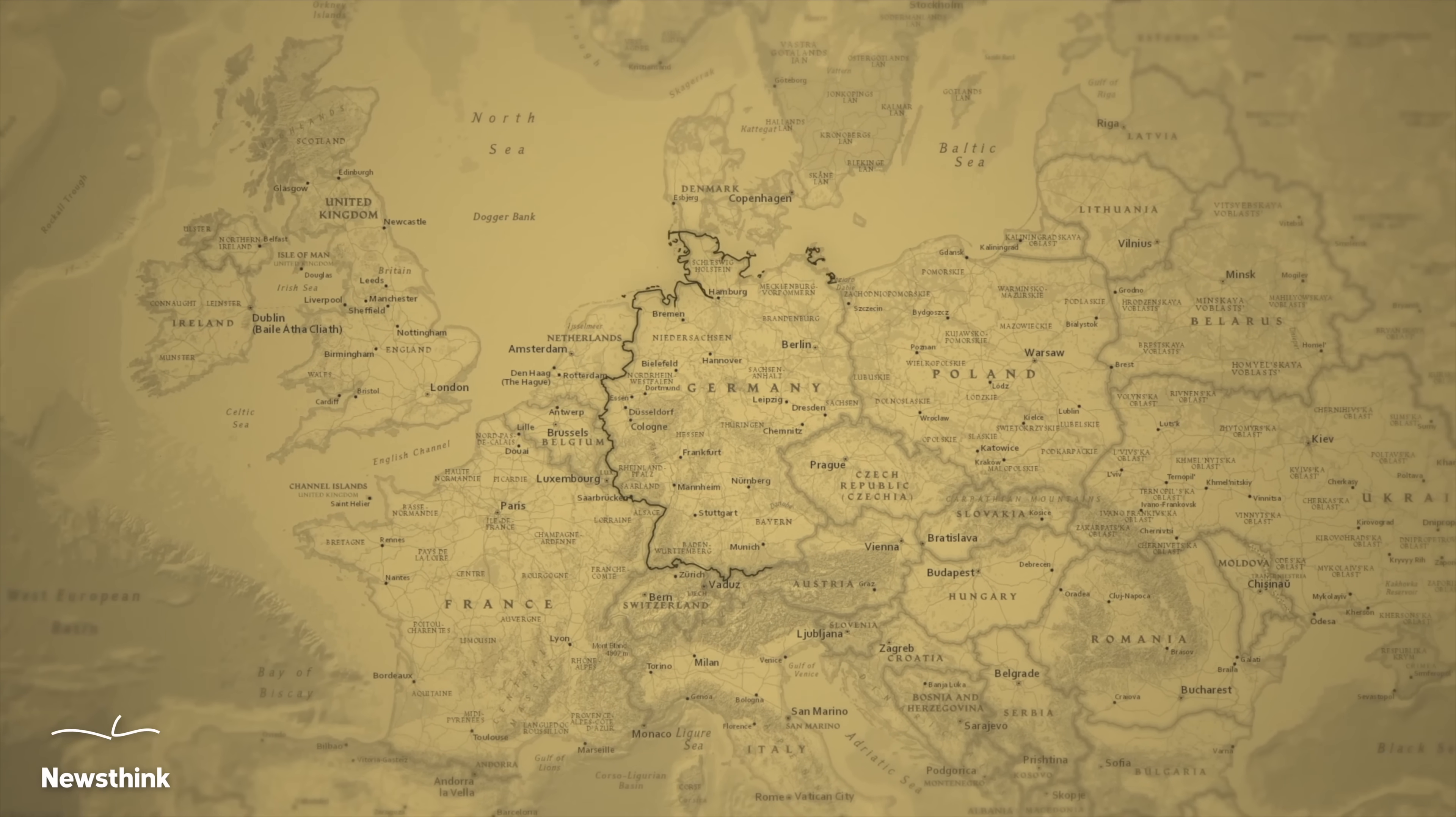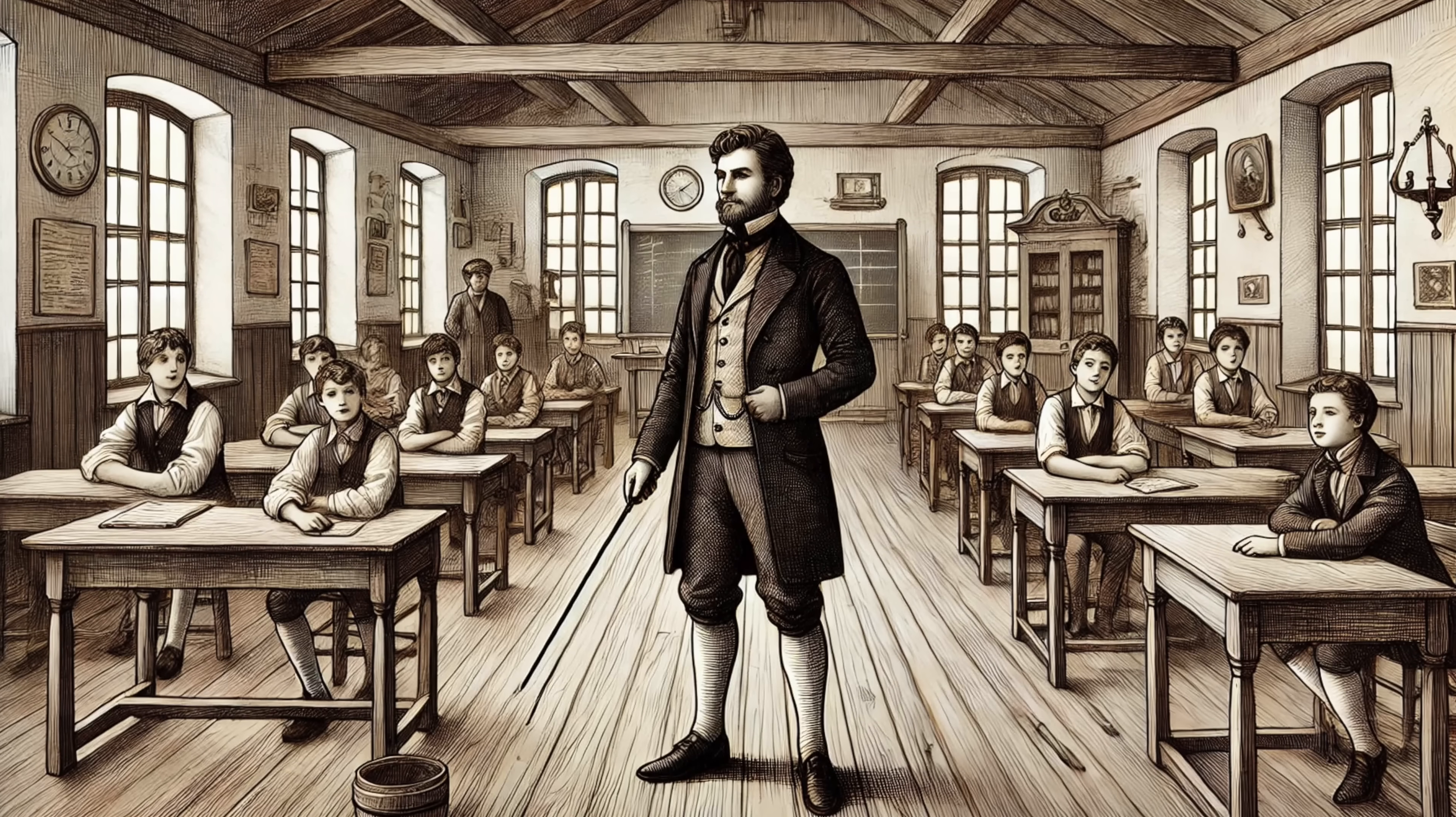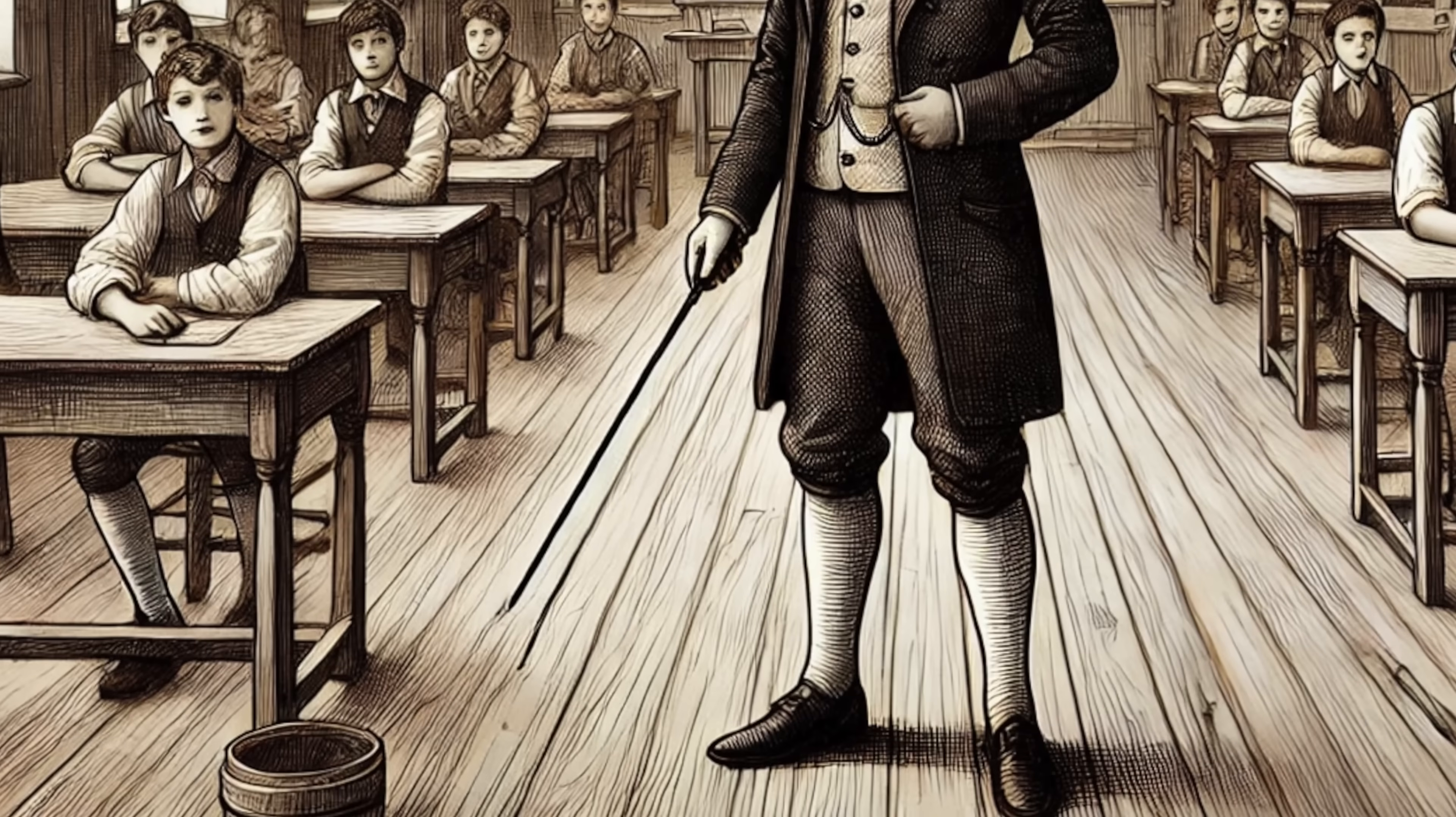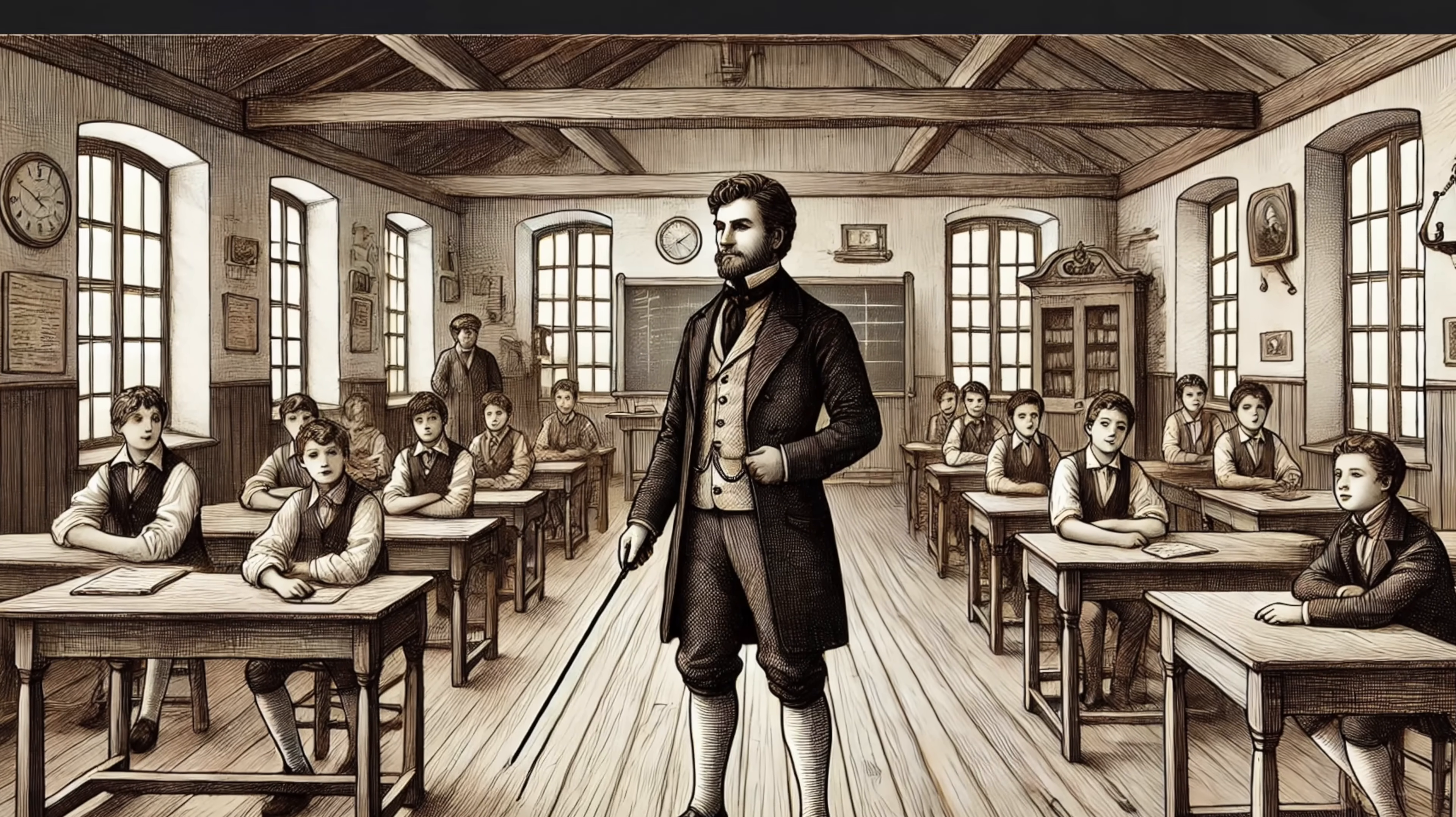At seven, Carl began attending his local elementary school in Brunswick, Germany. His teacher, Herr Wüttner, didn't hesitate to whip unruly children, but Carl wasn't intimidated. He always knew the answers.